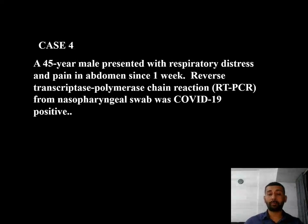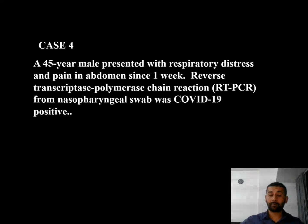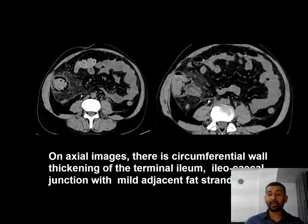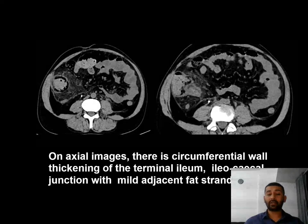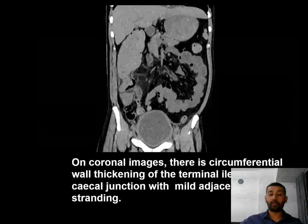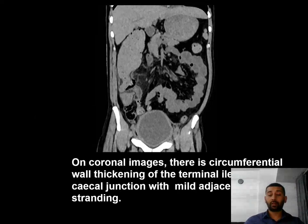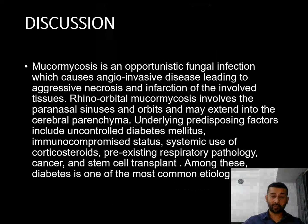Case 4: A 45-year-old male presented with respiratory distress and pain in the abdomen for one week. RT-PCR from nasopharyngeal swab was positive. On axial and coronal images, there is circumferential wall thickening of the terminal ileum and ileocecal junction with mild adjacent fat stranding.